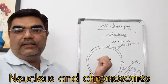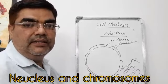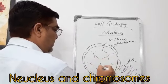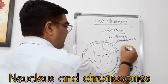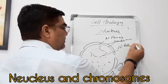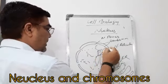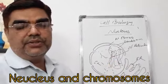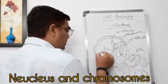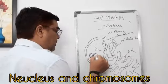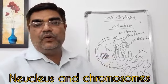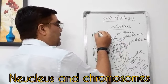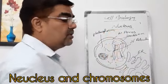Inside the nucleus, there is a network of chromatins called the chromatin network, or nuclear reticulum. Inside the nucleus, there is also a rounded structure without a membrane called the nucleolus, which is involved in protein synthesis. There is also a matrix in the nucleus that is called the nucleoplasm.